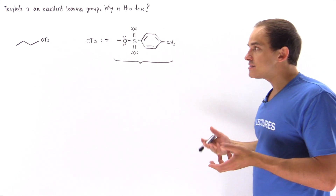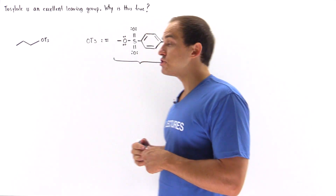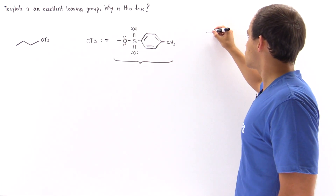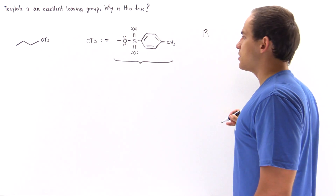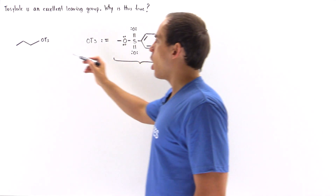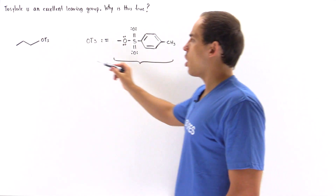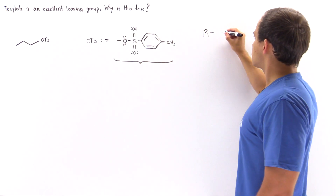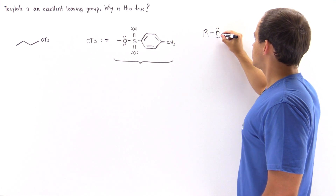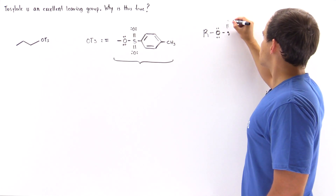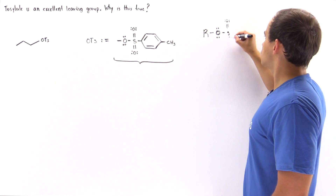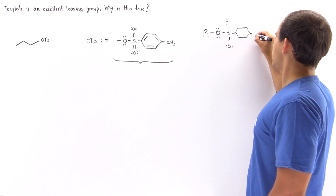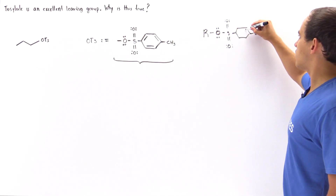The question is what makes this group such an excellent leaving group? To answer this, let's look at the reaction mechanism. We have our R group — a three-membered carbon chain — bonded to an oxygen, which is bonded to a sulfur double-bonded to two oxygens, and that sulfur is connected to a benzene ring bonded to a methyl group. This is our tosylate.